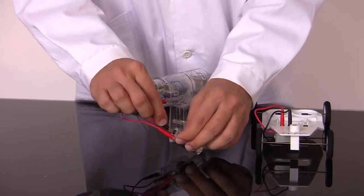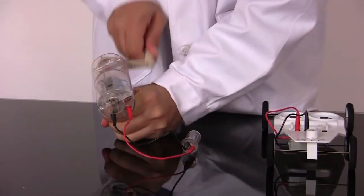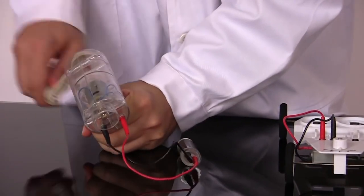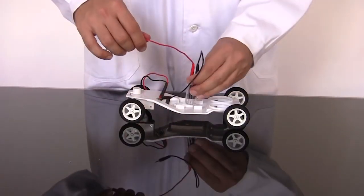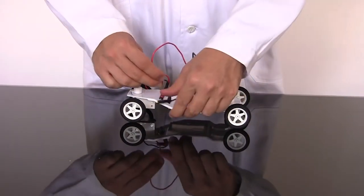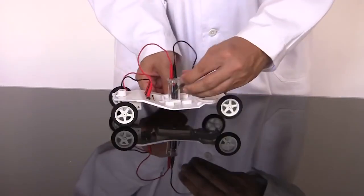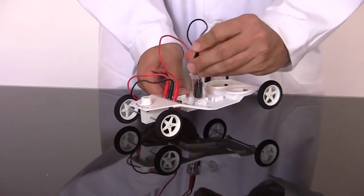The supercapacitor can also power the car. Charge the supercapacitor with the hand crank generator as before. Secure the supercapacitor to the middle of the car chassis and connect it to the motor. Then watch it go.